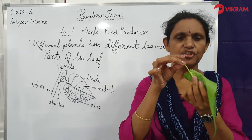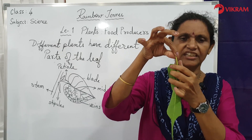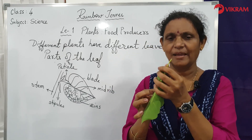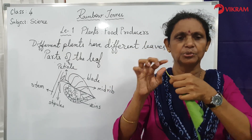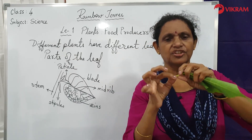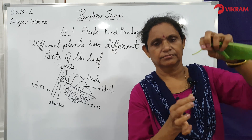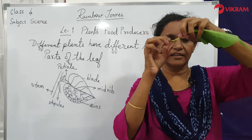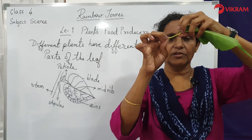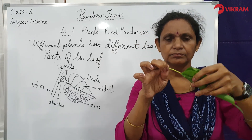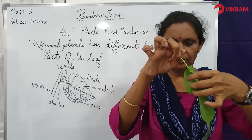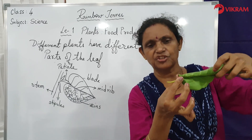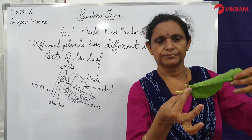The stalk or petiole is a thin section joining the base of the lamina to the stem. It is generally cylindrical or semicircular in form. You can see it is a roundish shape and it is attached to the stem.